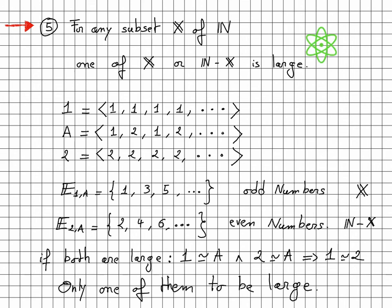In fact, if we look at the sequence 1, 2, and A here, we see that the set E_1A is the set of odd numbers. And the set E_2A is the set of even numbers. And if both of them are large, then we can write that 1 is equivalent to A and 2 is equivalent to A. Therefore, by transitivity, 1 must be equivalent to 2, which would not be okay. So again, we have this constraint here that only one of the two sets must be large.